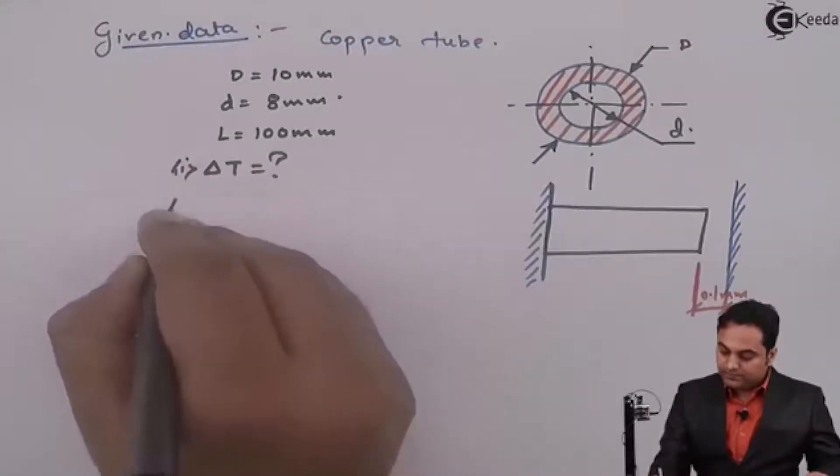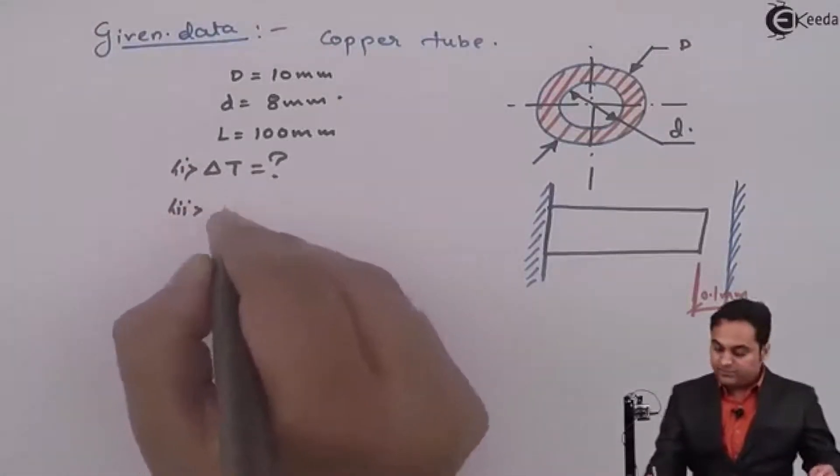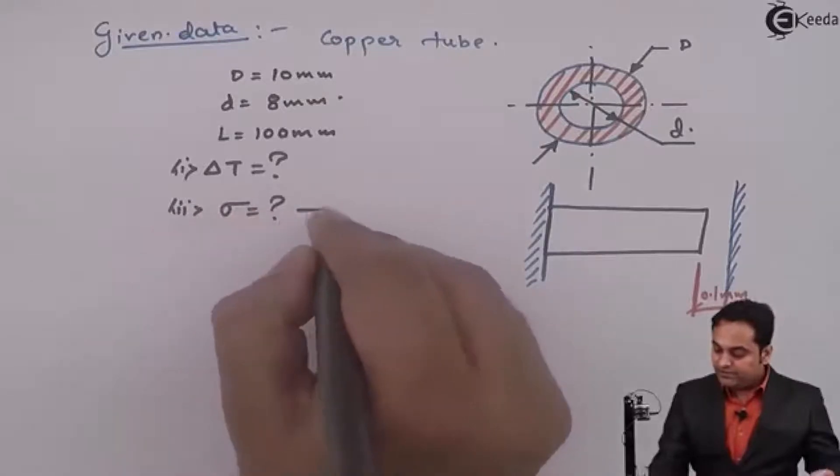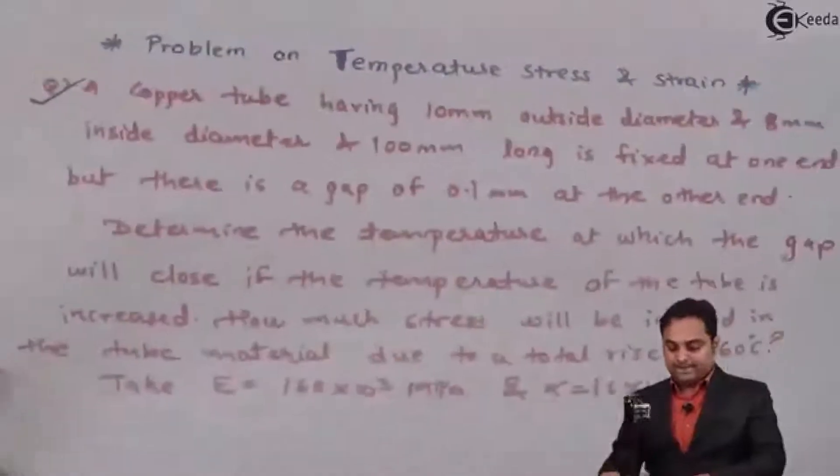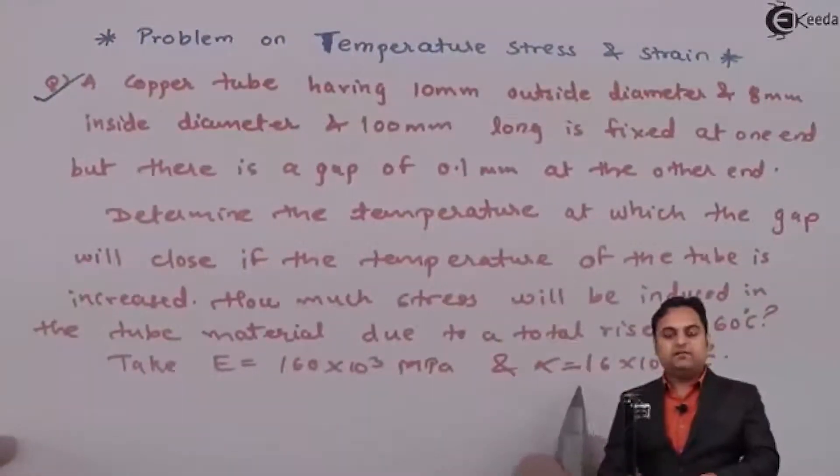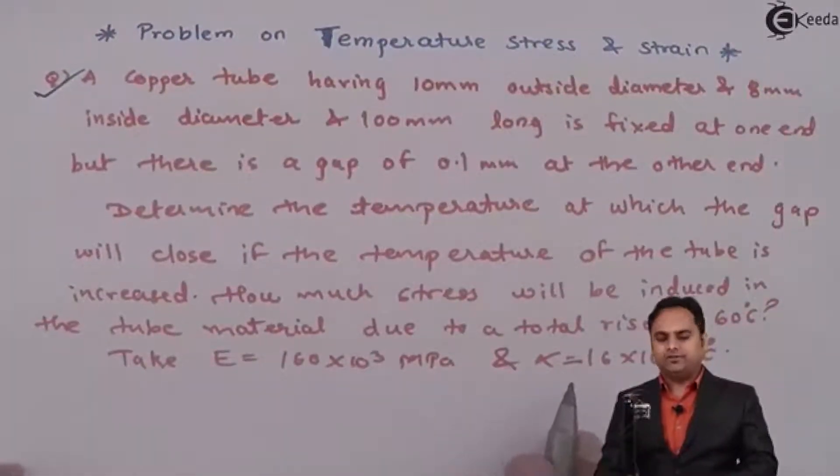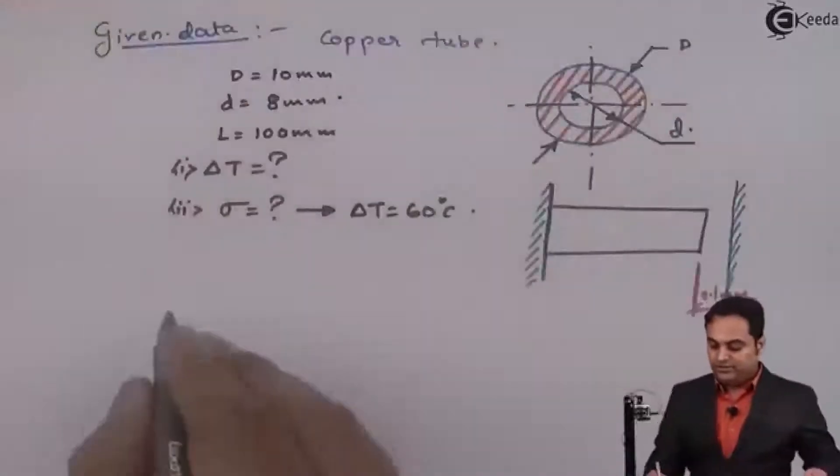So next, in the next case they are saying that how much stress will be developed if the temperature is rising by 60 degrees Celsius. Young's modulus and alpha coefficient of thermal expansion and contraction is given, so I'll write their values.